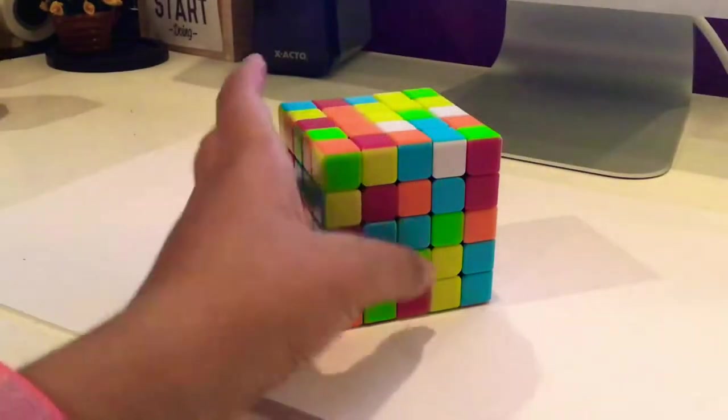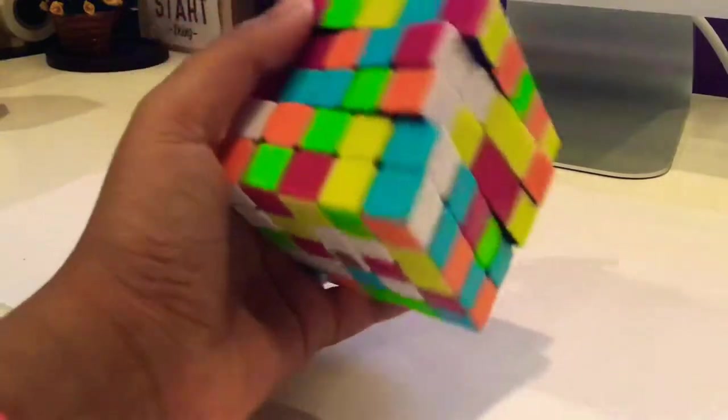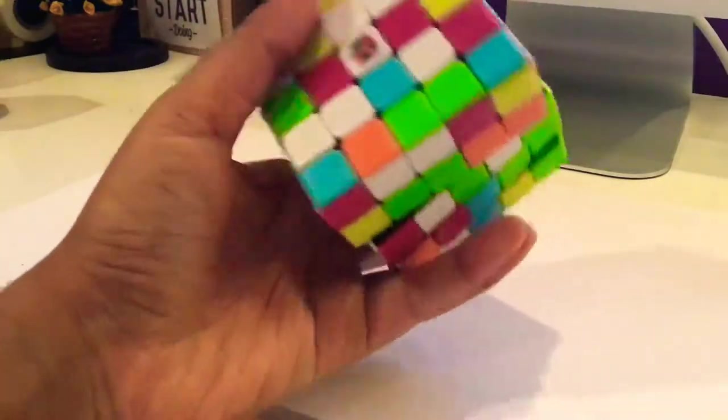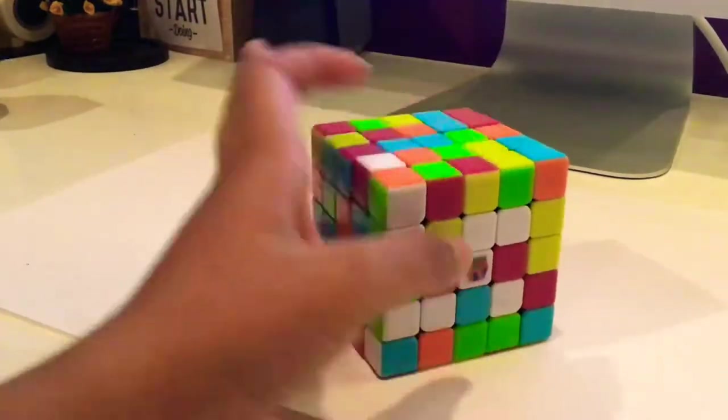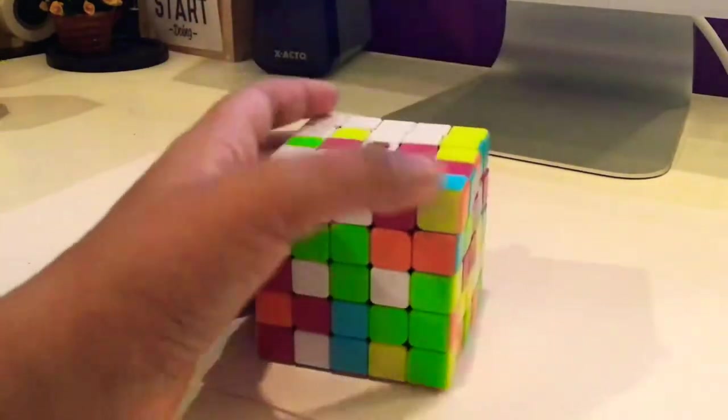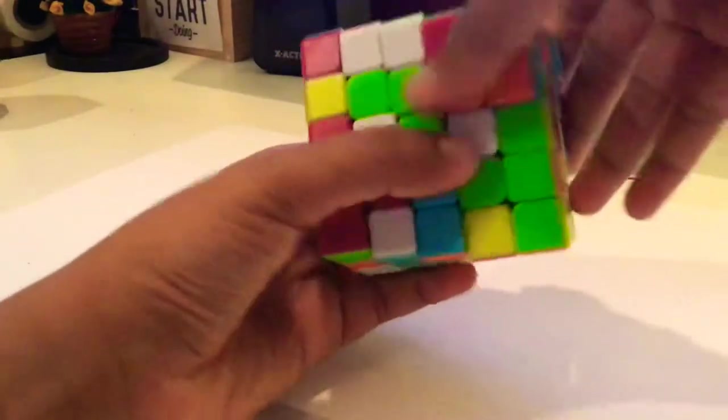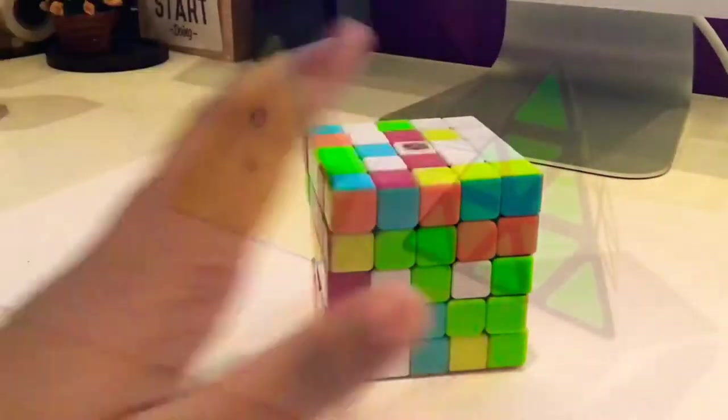For 5x5, I currently only own one 5x5 which is a Shengshou Gem 5x5. It's actually surprisingly really good. Well, it's not really good but it's good enough for the price I got it, which was four dollars off thecubicle.com. The turning is decent, there's no corner cutting, but the color shades are really nice.